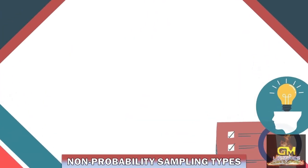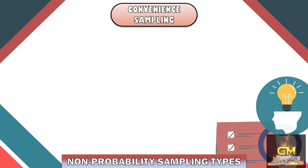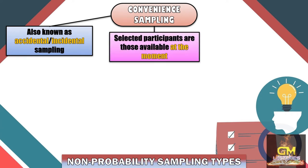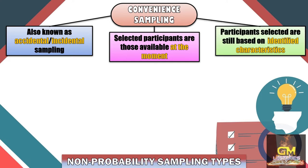Now let's go back to the different types of non-probability sampling techniques, starting with convenience sampling. Convenience sampling is also known as accidental or incidental sampling. In convenience sampling, selected participants are those who are available at the moment during the conduct of the research. However, it is worth noting that in convenience sampling, the participants selected are still based on identified characteristics.